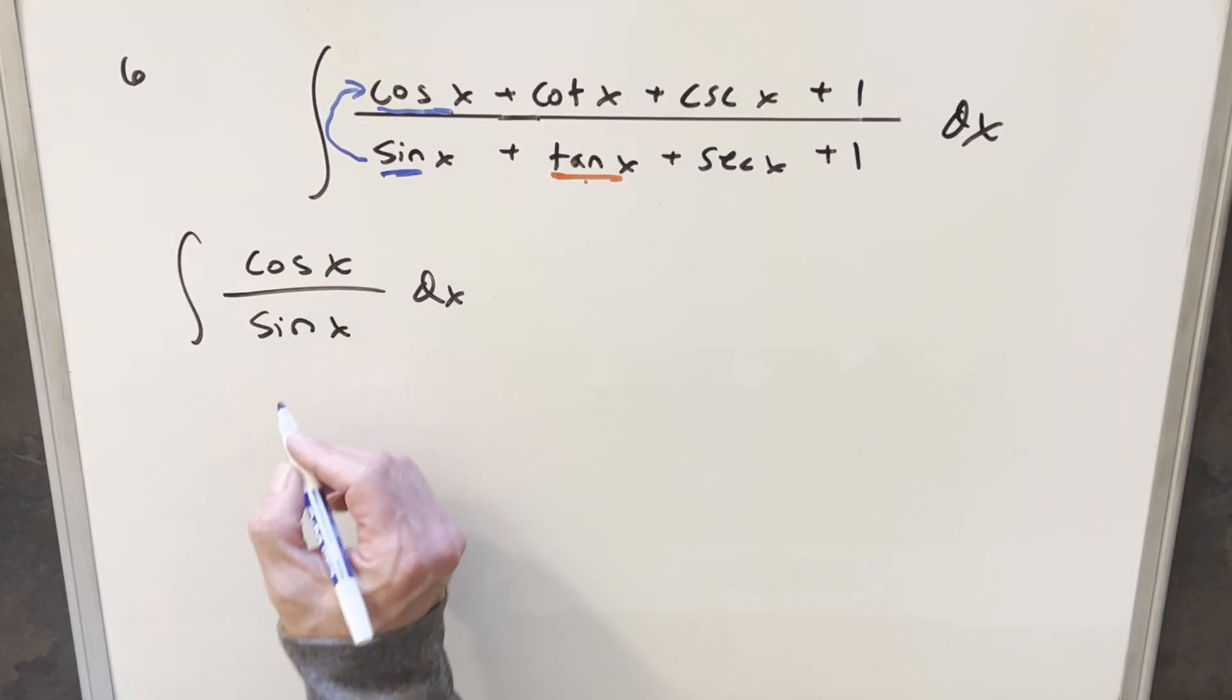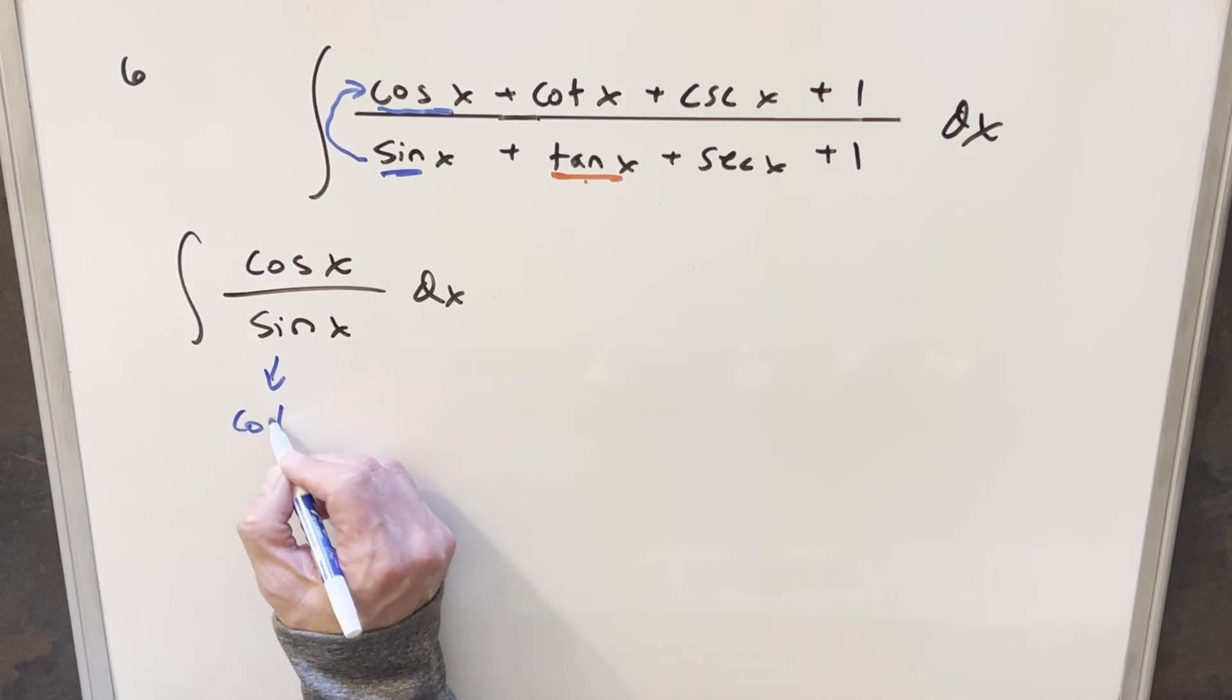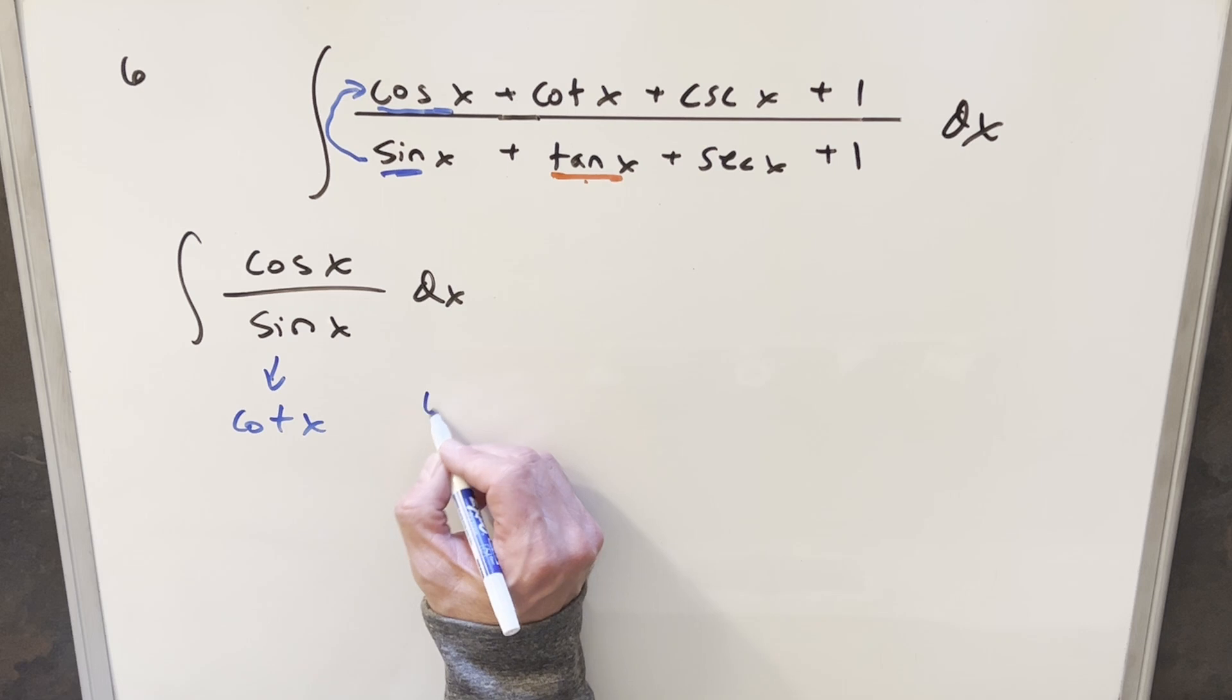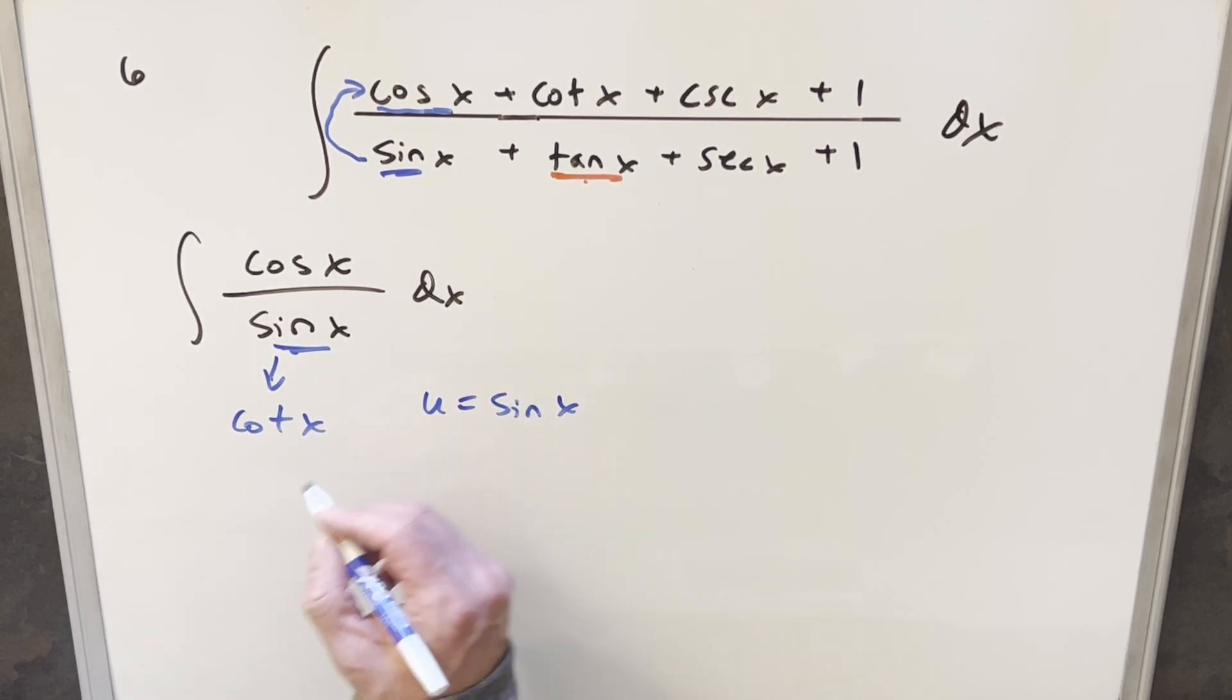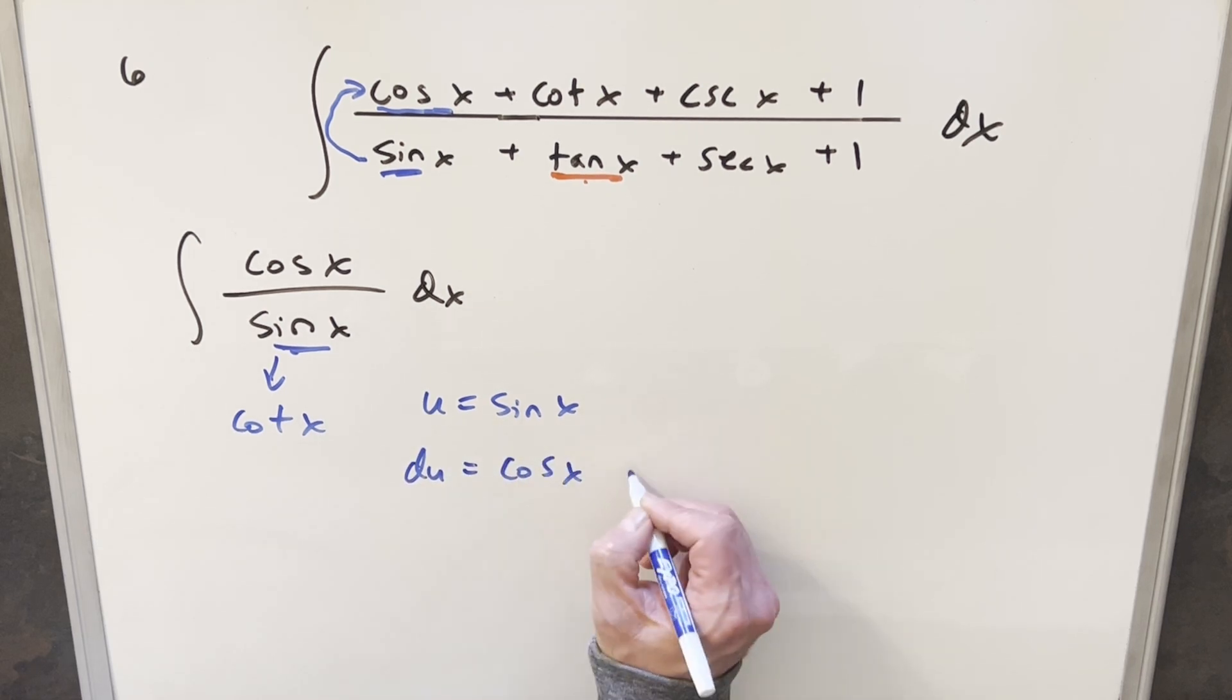Okay, now to integrate this. Now we could just use a formula because cosine x over sine x is cotangent x. But what I want to do instead, let's just do the u substitution really quick. So I'll make sine x my u. Just because it's such an easy u substitution. So then taking a derivative, du is going to be cosine x dx, which is exactly what we have here.